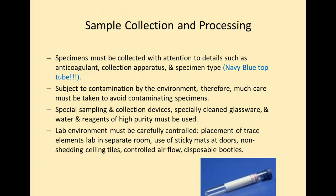Let's look at sample collection and processing of trace and ultra trace elements. Specimens must be collected with extreme attention to detail — they require certain anticoagulants, certain collection apparatuses, and a special sample type. The navy blue top tube, for example, is a tube created in an environment with special glass that is known not to contain ultra trace elements. Glass made from silica can contain those elements, and we wouldn't want them to leach into the patient sample and create an inaccurate result.